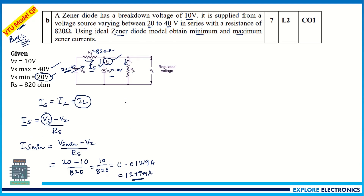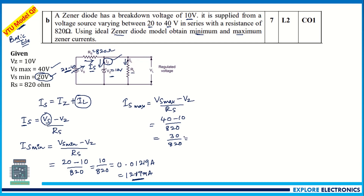Similarly, IS_maximum flows when VS is at its maximum value. IS_max = (VS_max − VZ) / RS = (40 − 10) / 820 = 30 / 820 = 0.0365 amperes, which we can write as 36.5 milliamps. This is IS_maximum.